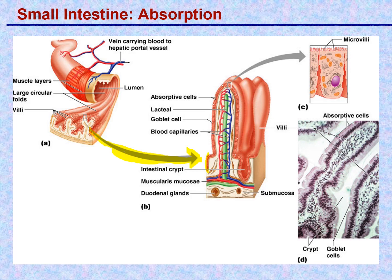That simple columnar epithelium is shown here at the surface — this is a villus in cross-section. All of this pink material is a simple columnar epithelium covering the entire surface of these villi. The mucosa is made of the mucosal epithelium. The lamina propria, just underneath, has blood vessels and lacteals in it. And then a thin layer of muscle called the muscularis mucosa.